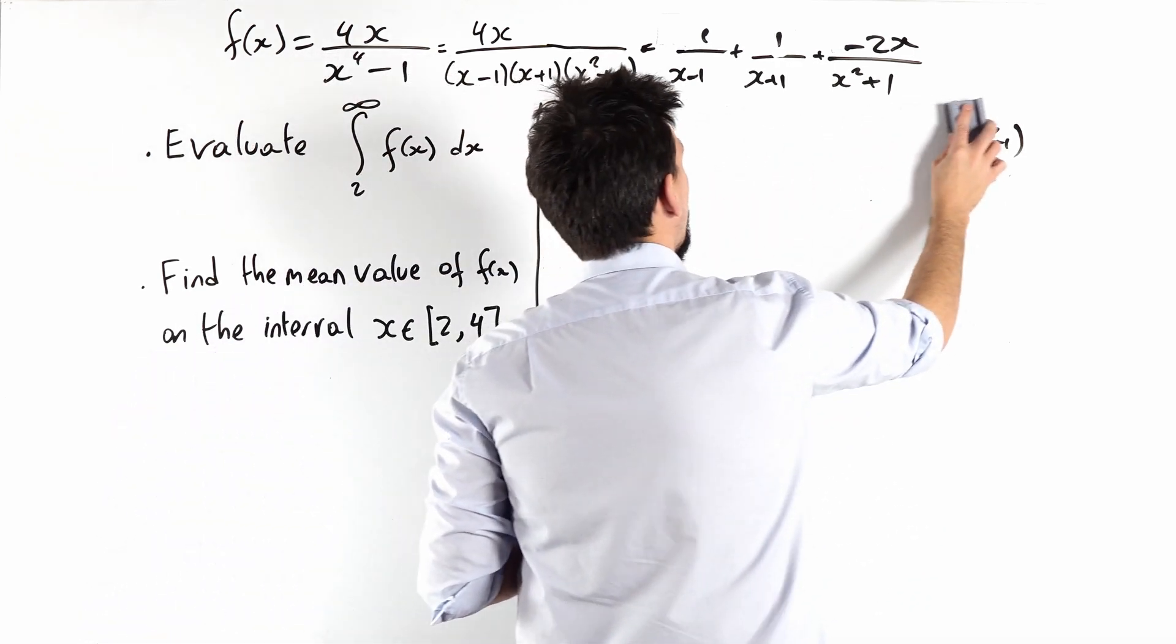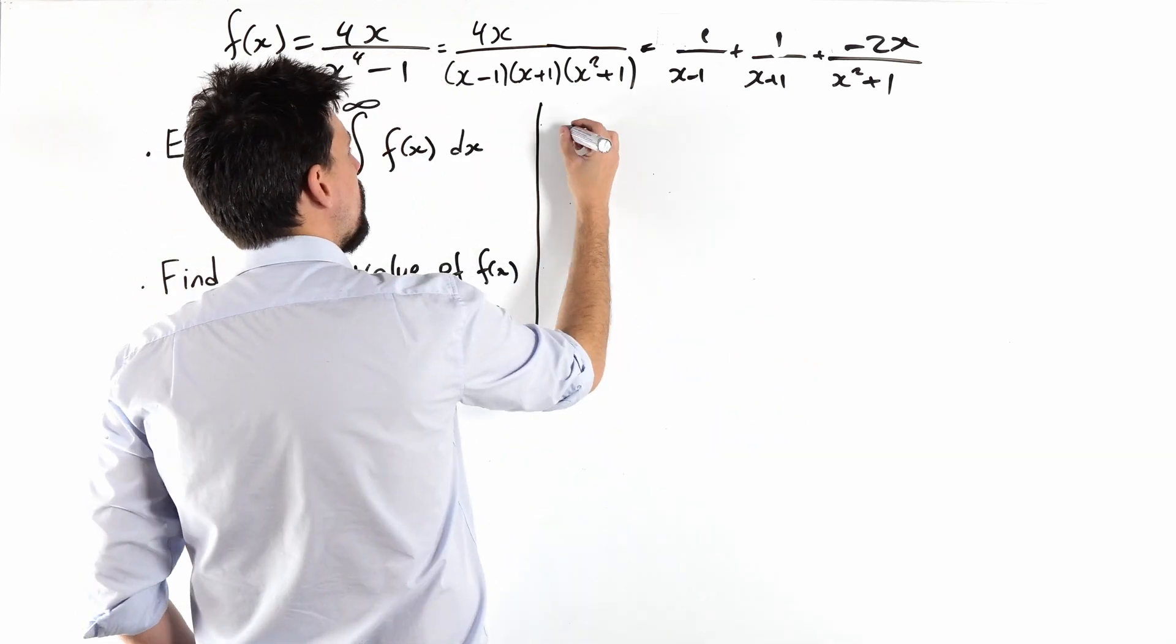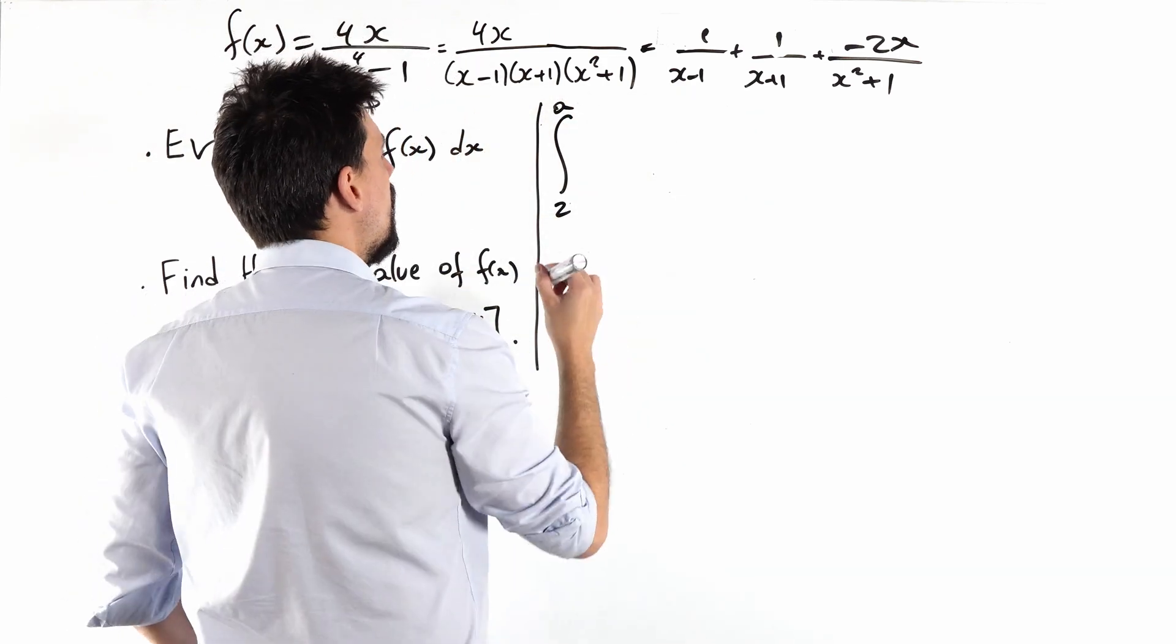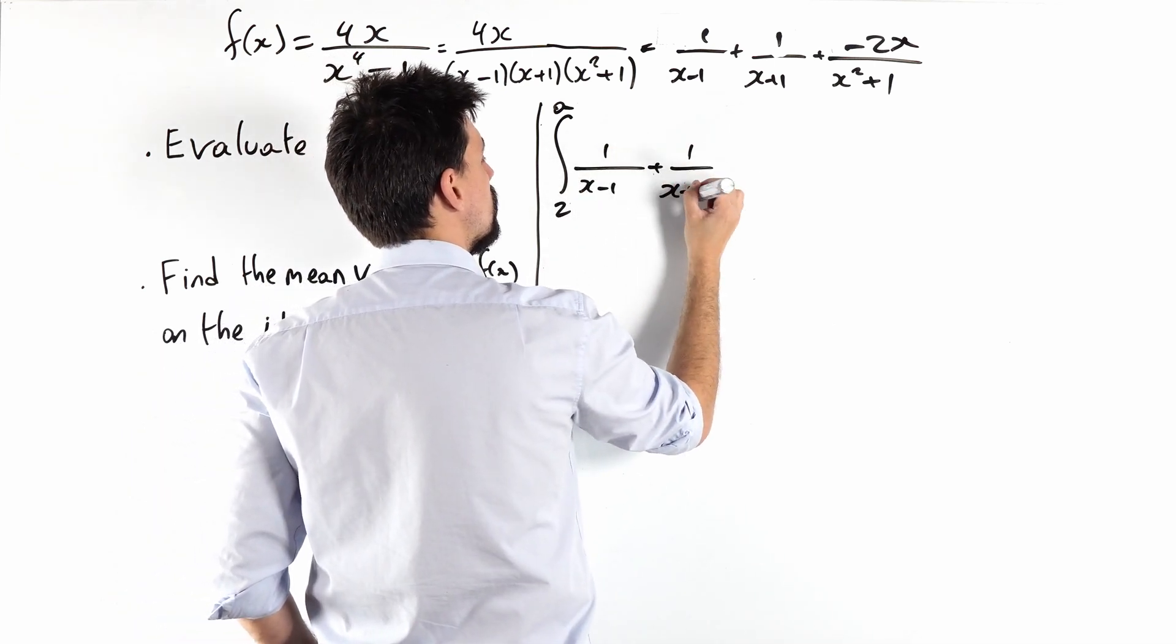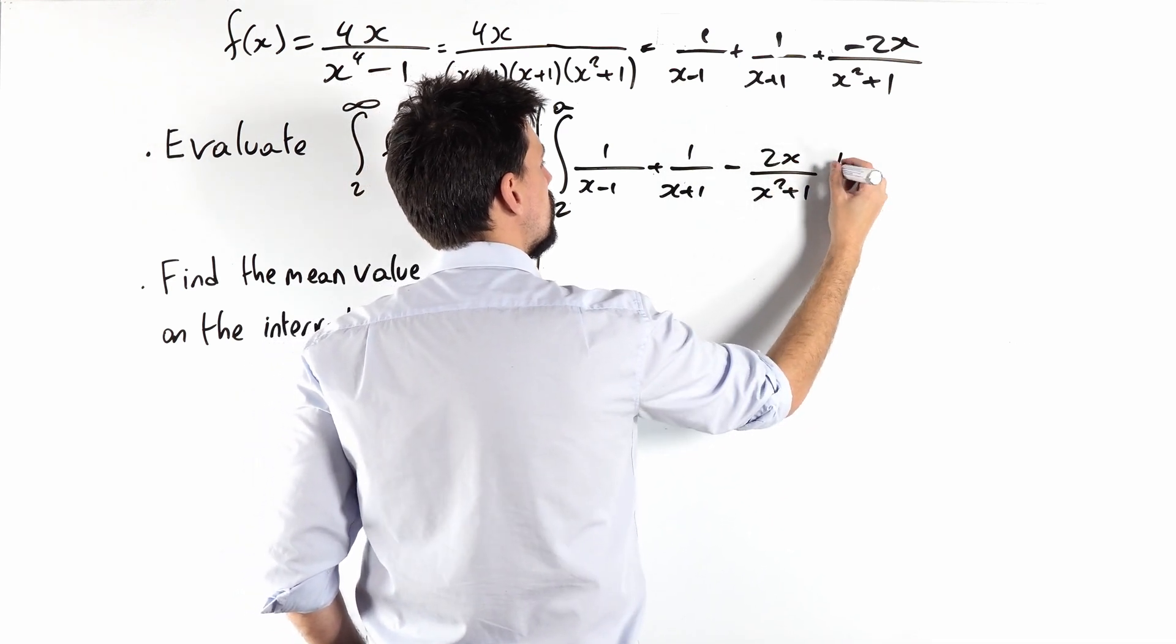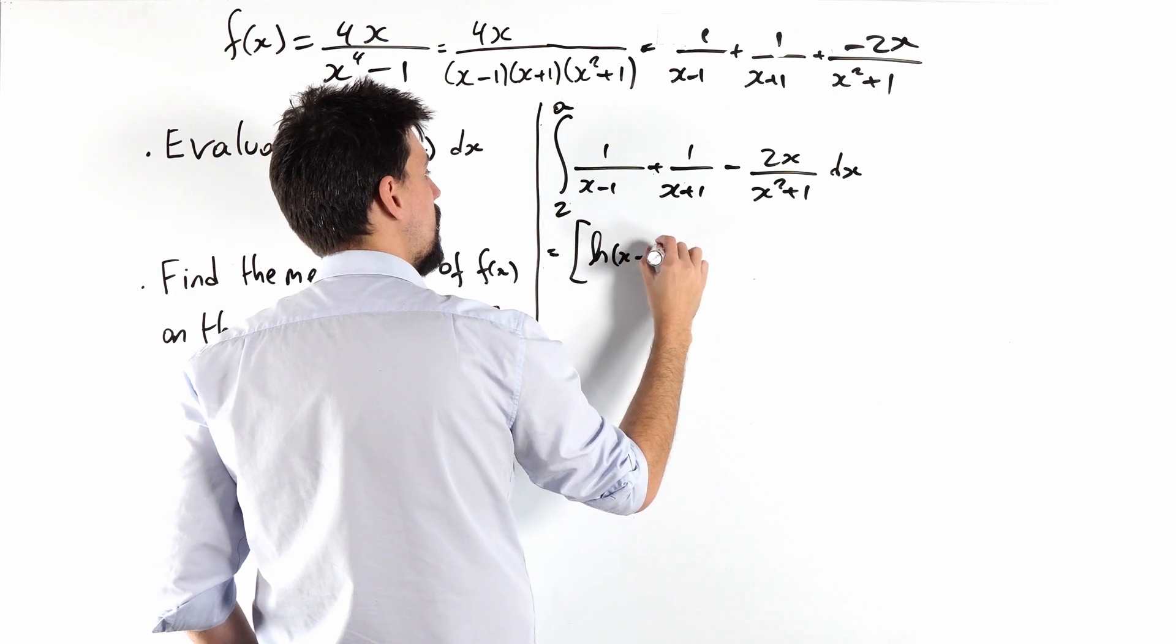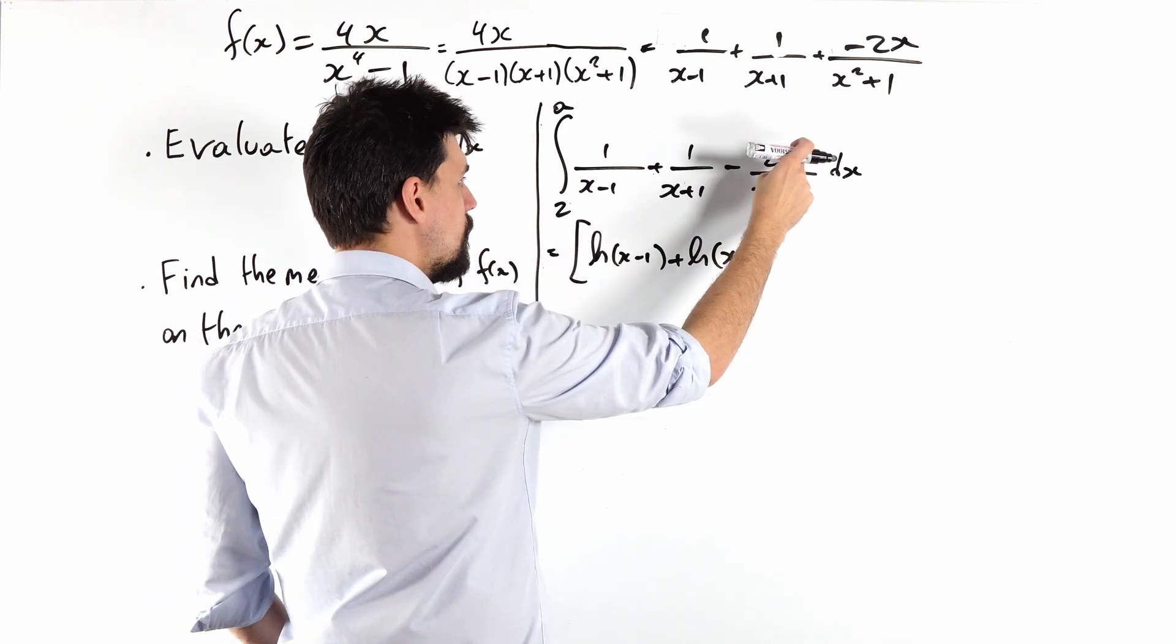So now, what we need to do is integrate this stuff. Now we're going to go from 2 to a, right? And then we will let a go to infinity, but this is going to be useful for us as a result. That's nice. That's ln of x minus 1. That's ln of x plus 1.